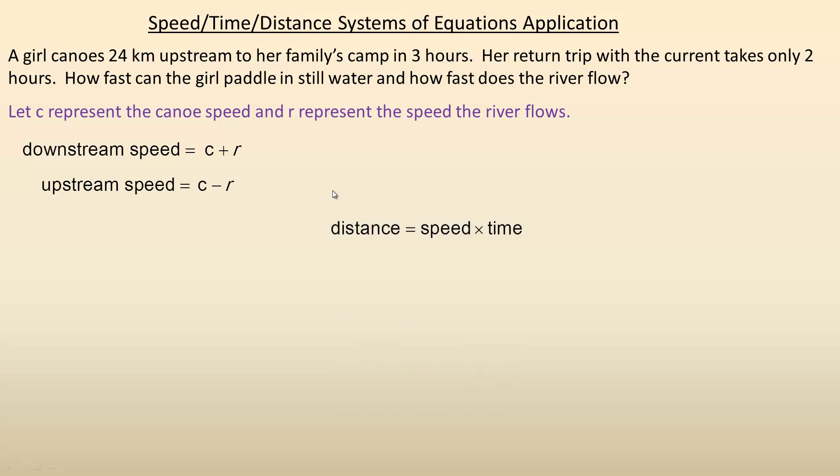We are going to use the relationship distance equals speed multiplied by time. You might have seen this in a previous math class or science class. We'll use this to get the two equations for our system. I'm going to rearrange it though - instead of writing distance equals speed times time, I'll write time times speed on the left and distance on the right.